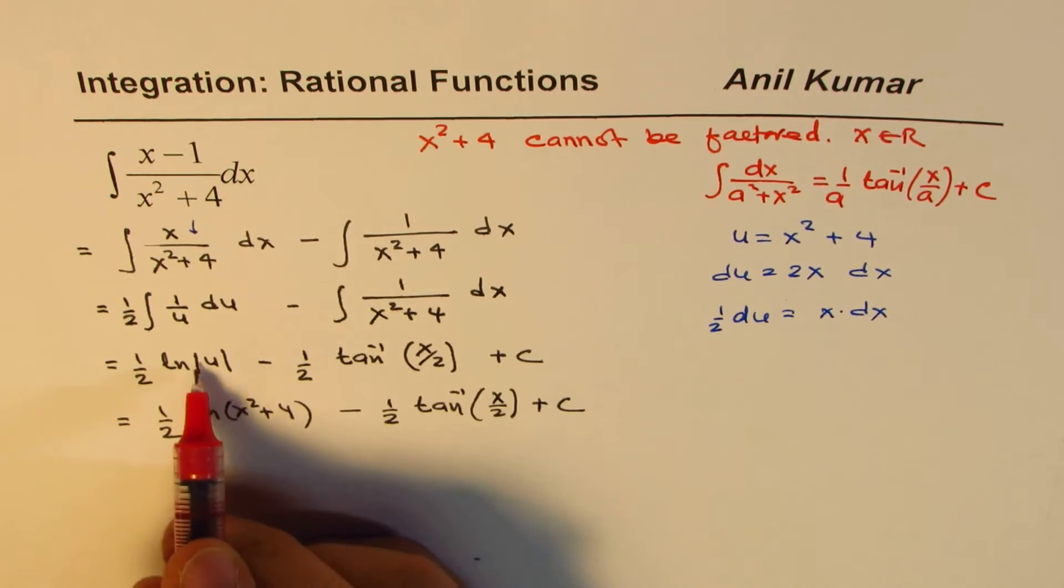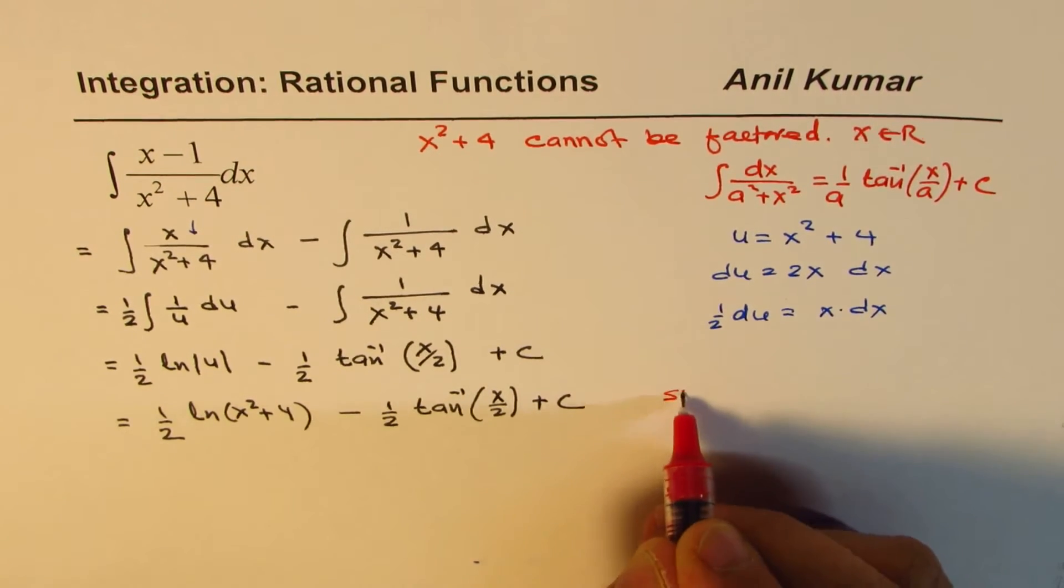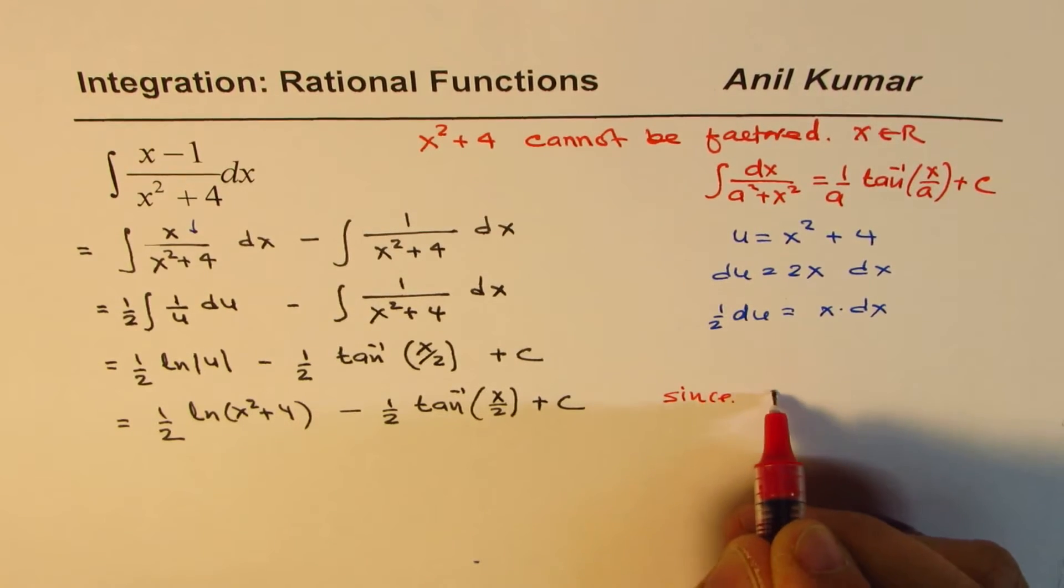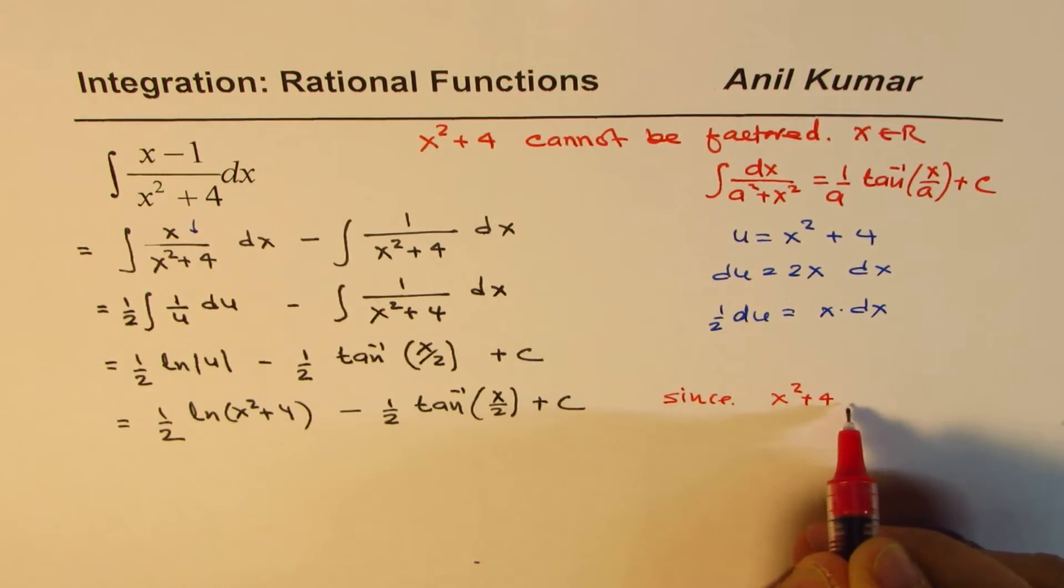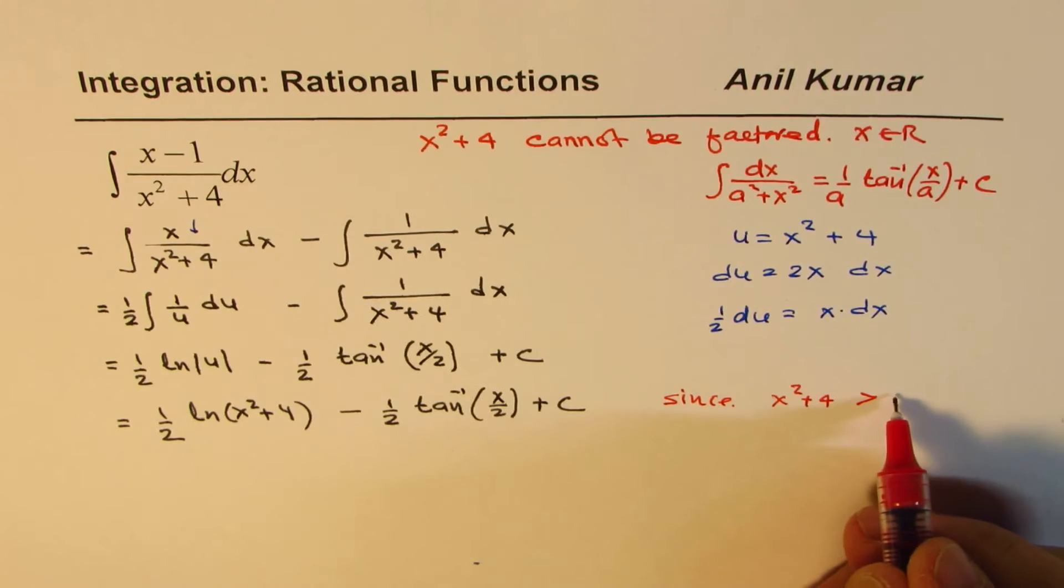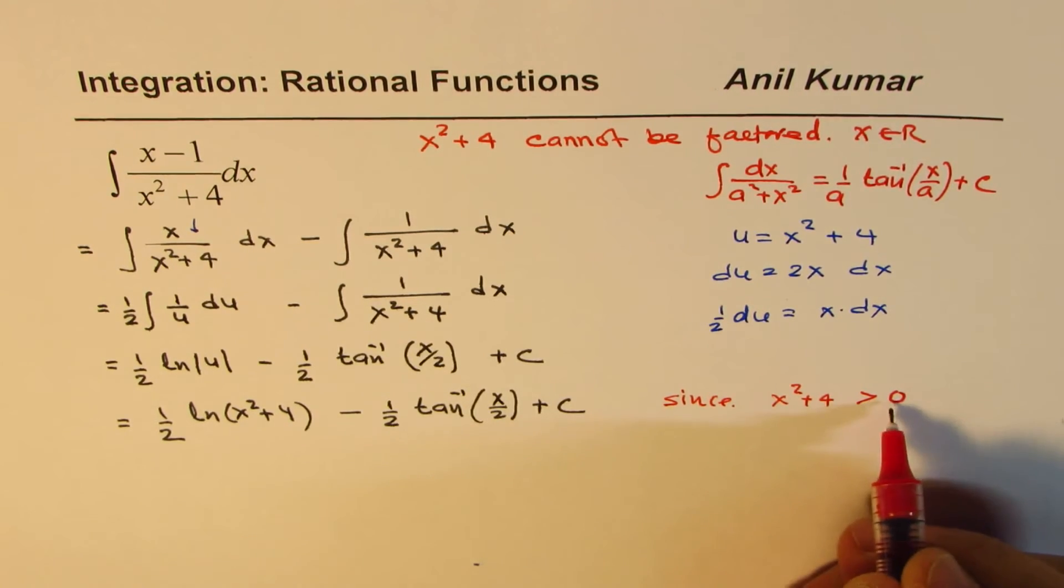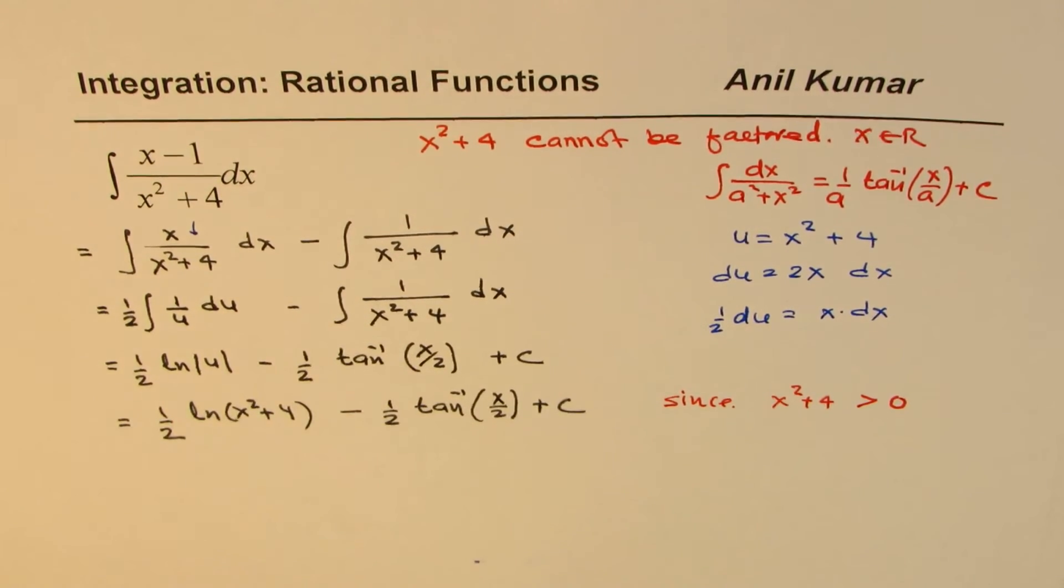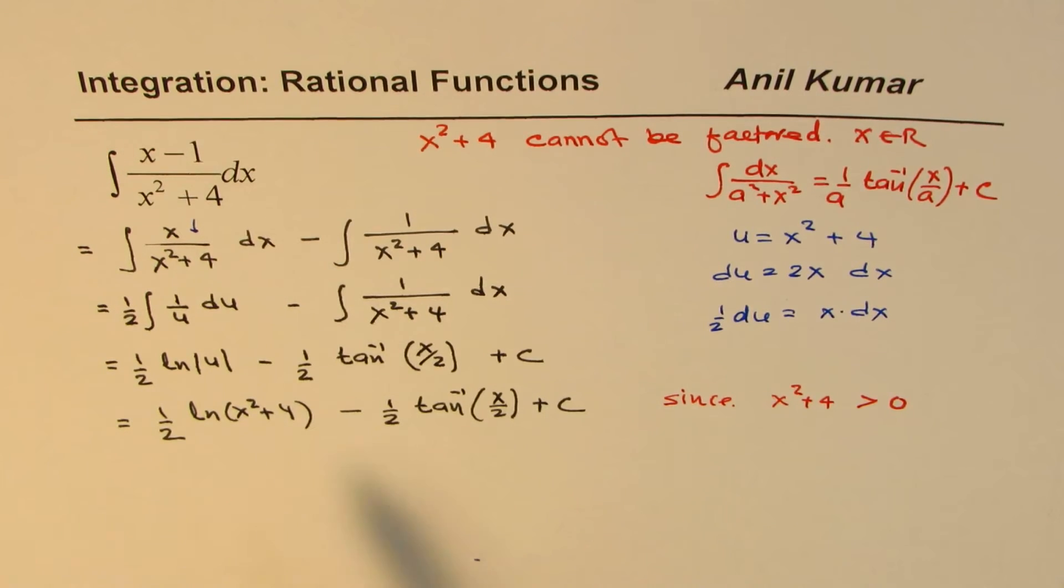So, since we know why we change this, since we know that x square plus 4 is greater than 0, since it is always positive, there is no need to write the absolute function.